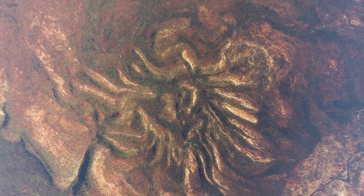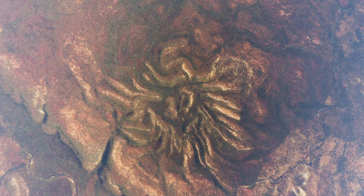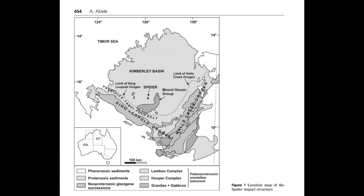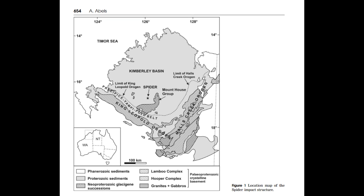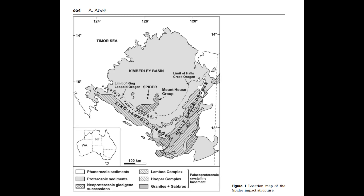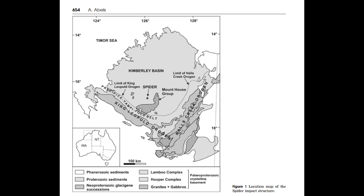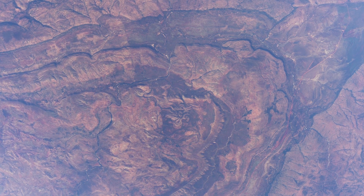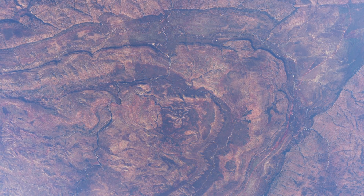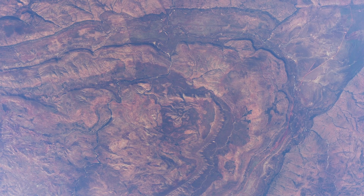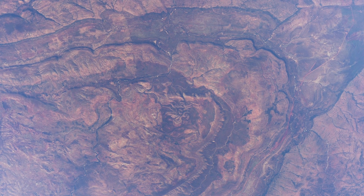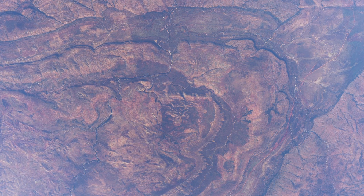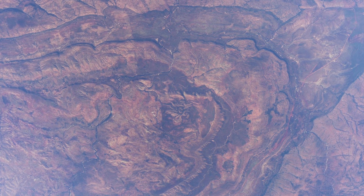Furthermore, the Spider Structure offers clues about the history of the Kimberley Plateau and the broader region. The impact event is estimated to have occurred between 900 million and 610 million years ago, during a period of significant tectonic activity. This timing is constrained by the Yampy Orogeny, a major mountain-building event that affected the region around 900 million years ago, and the deposition of the Walsh Tillite around 610 million years ago, when the region was covered by glaciers. The impact occurred before these ice sheets formed, likely in an already existing syncline, suggesting significant tectonic deformation preceded the event. The deep erosion of the Spider Structure, which has exposed the central uplift and removed much of the original crater, further indicates the Kimberley Plateau has experienced considerable geological change over the past several hundred million years.